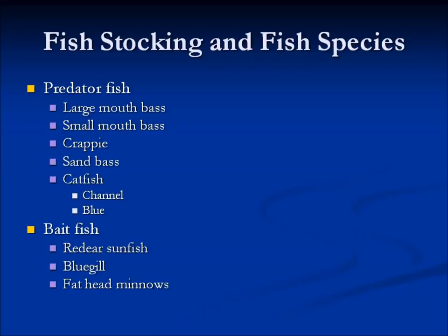Next is stocking fish in our ponds. Once the pond is constructed and full of water, we determine whether it's for recreational purposes or controlling aquatic vegetation and then look at fish species to stock. We can categorize fish into predator fish — largemouth bass, smallmouth bass, crappie, sand bass, catfish — and bait fish, with sunfish, bluegill, and fathead minnows being three of those species.